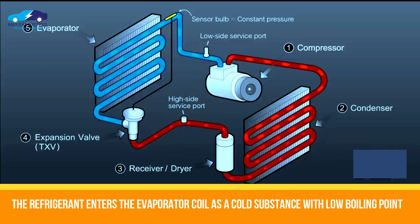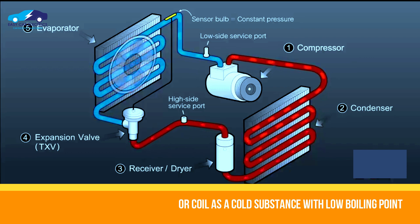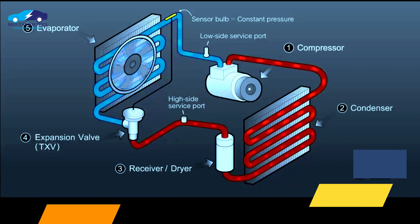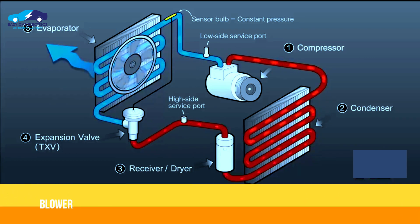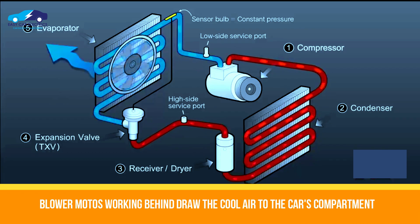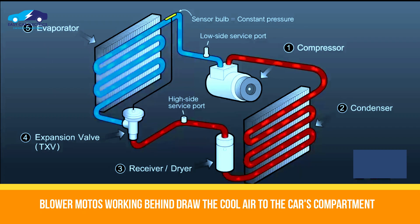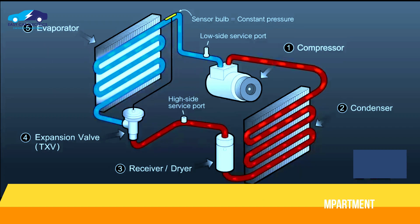The refrigerant enters as a cold substance with a low boiling point after passing through the expansion valve. Blower motors work behind the AC vents to cool air, drawing it into the car's passenger compartment.